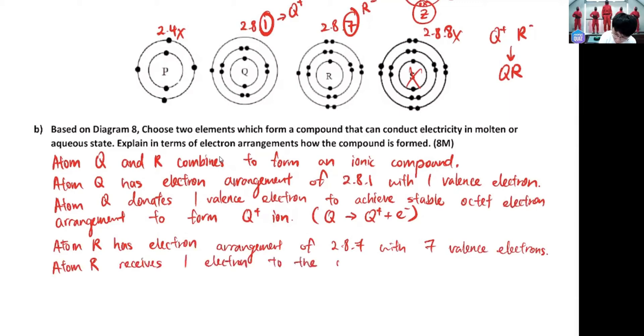To achieve stable octet electron arrangement and form R- ion. Equation is R received electrons become R-.